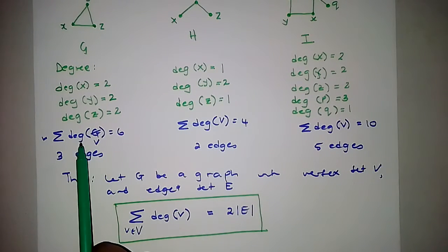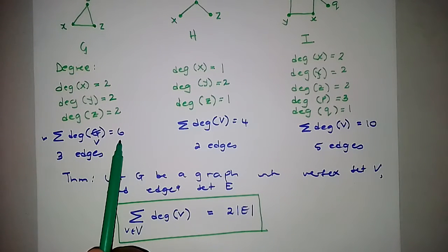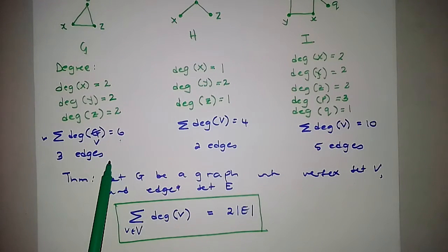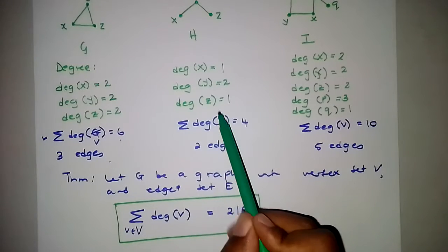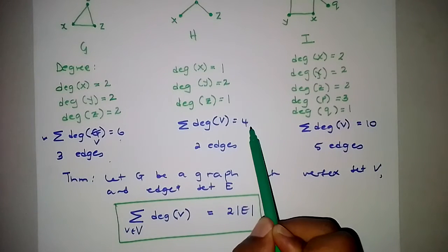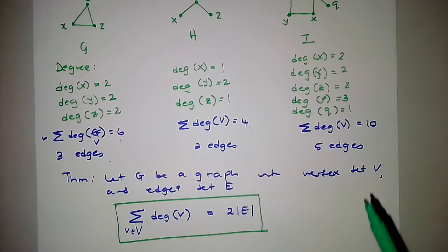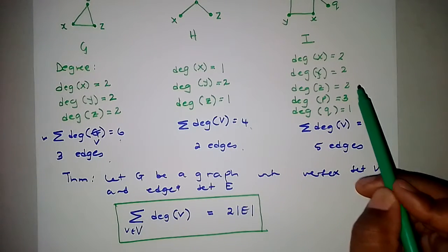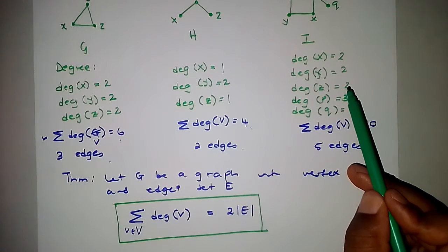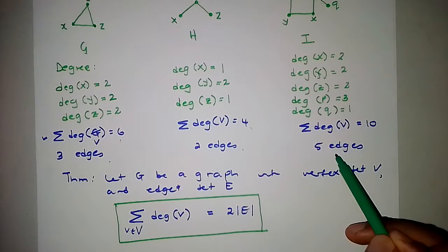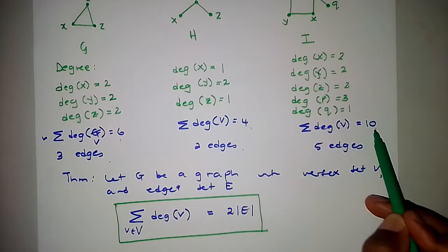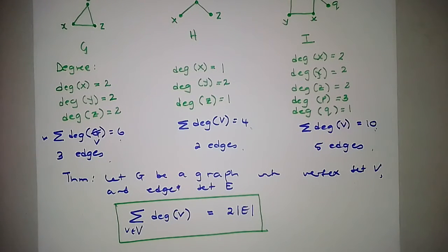For Graph G we summed the degrees and got 6, which is 2 times 3 edges. For Graph H, the sum is 4, which is 2 times 2 edges. And for Graph I, we got 10, which is 2 times 5 edges. Can you see the correlation?